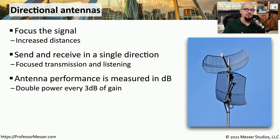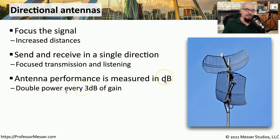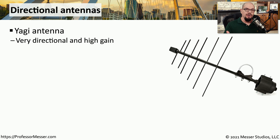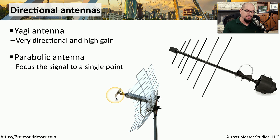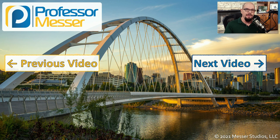Antenna performance is usually rated in decibels. If you increase the signal strength by three decibels, you're effectively doubling the power of that signal. Yagi antennas are very common — they don't take up much room, send information very directionally, and usually provide very high gain. If you're sending information over a much longer distance, you may want to use a parabolic antenna, which has higher gain and focuses the signal to a single point by bouncing it off the parabola into the feed horn at the front.